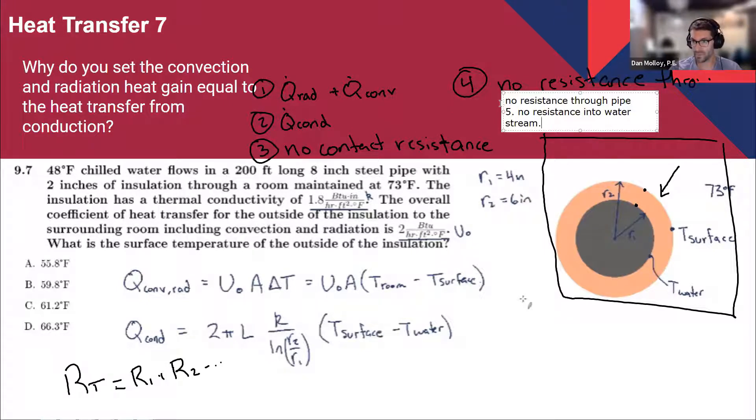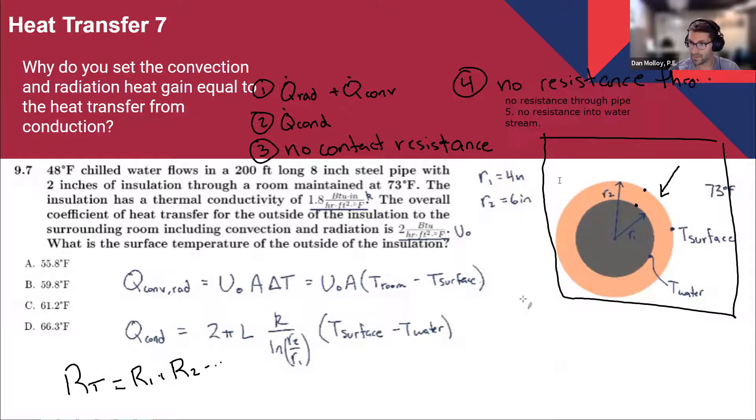So no resistance into the water stream. So if you're buying those assumptions for three, four, and five, then what we're saying is that this heat transfer in, normally we'd have to add up all of the resistances through all of those layers. Now we're saying that goes through really two layers, one and two. And since there's only two, rather than add up the resistances, I'm just saying that the amount of heat transfer through one equals the amount of heat transfer through two.